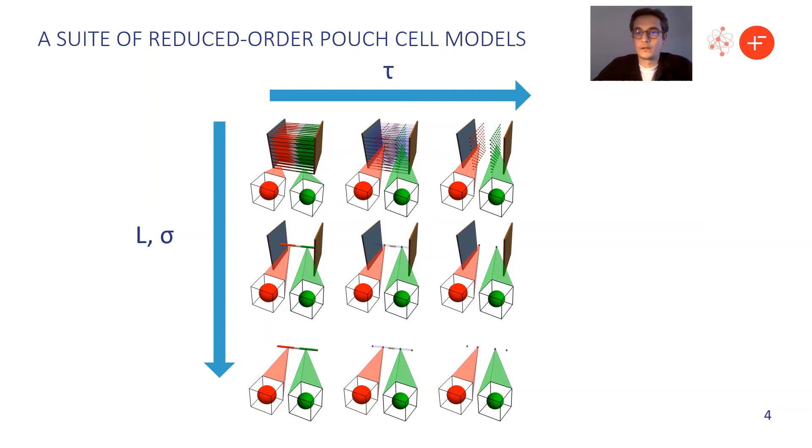So when the current collectors are very conductive, we might get away with solving just a single average model, as represented in the second row here. And in this model we still solve a 2D problem in the current collectors, which we can use to compute a resistance associated with the current collector and the placement of the tabs, for example. And if the current collectors are even more conductive, then the potential is uniform everywhere, the behavior is uniform within the current collectors, so we can do away with them altogether and just solve a 1D model.